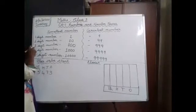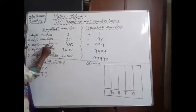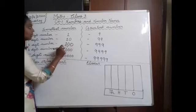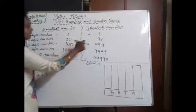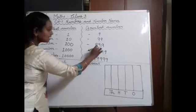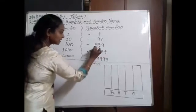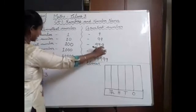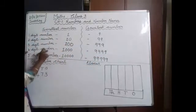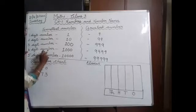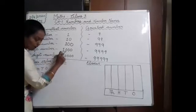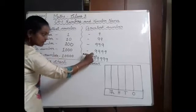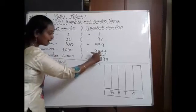Next, the smallest three-digit number is 100. The greatest three-digit number is 999. Next, the smallest four-digit number is 1000, and the greatest four-digit number is 9999.